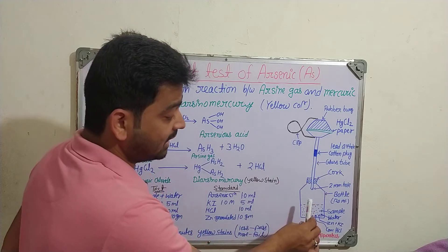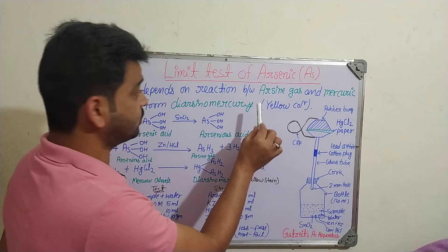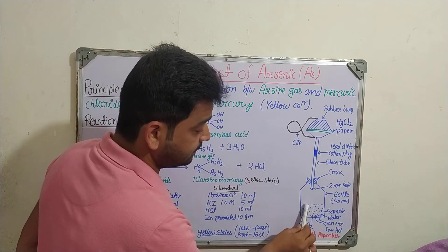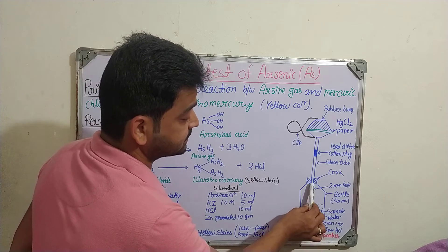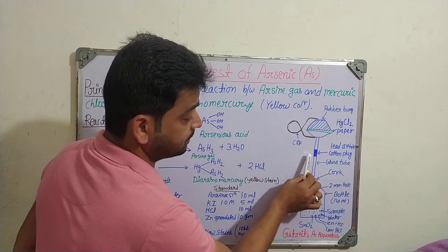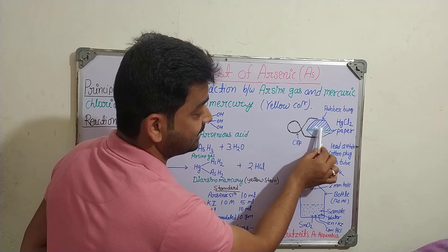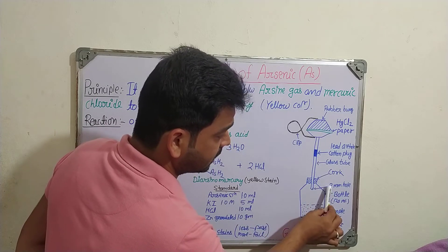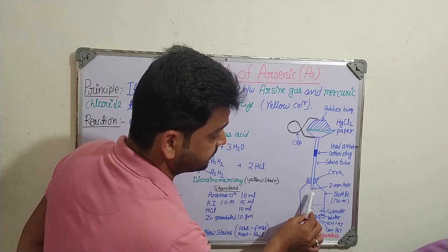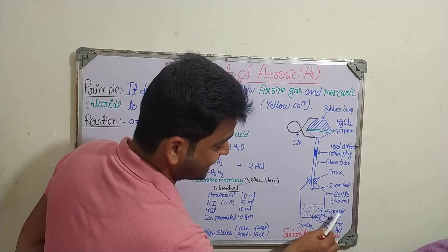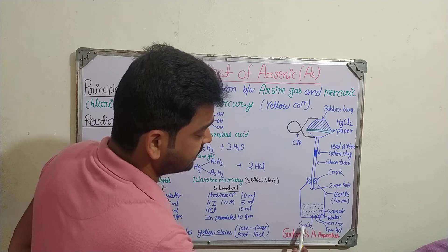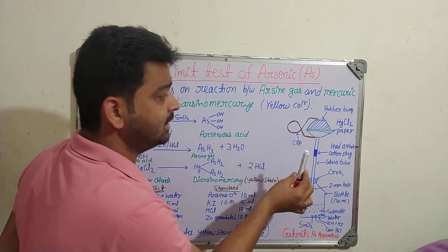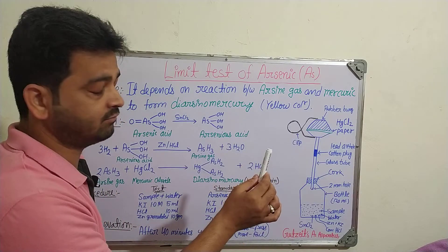In this particular limit test, arsenic gas has to reach the mercury chloride paper — that's what we have seen in the principle. Arsenic gas and mercury chloride are going to react and diarseno-mercury is going to form. The arsenic gas will go through this pipe and the lead acetate cotton plug will stop other gases from passing, so only arsenic gas will reach the mercury chloride paper. The reaction will take place and you are going to get a yellow stain. The bottle is 100 ml or 120 ml. In it, we are going to add the sample, water, zinc, potassium iodide, concentrated HCl, and stannous chloride — all things required for the reaction to produce arsenic gas — and ultimately the yellow stain will indicate the reaction has been completed, to be assessed after 20 or 40 minutes.